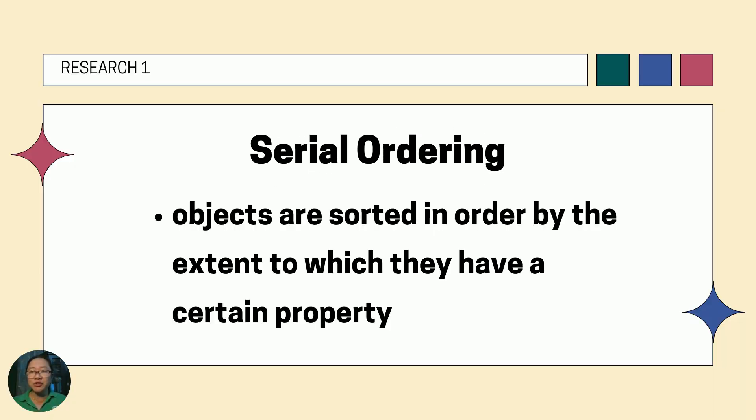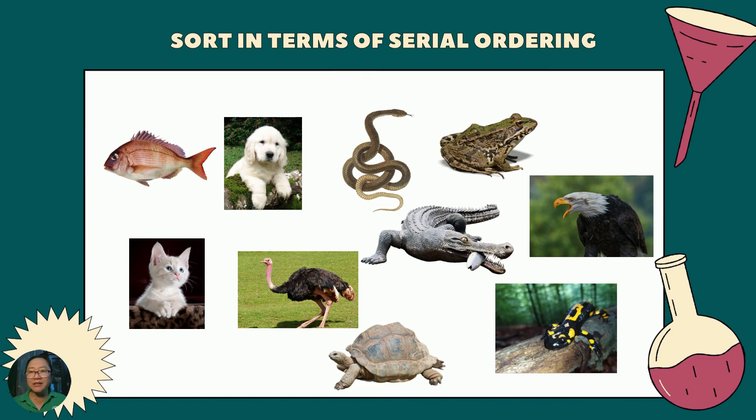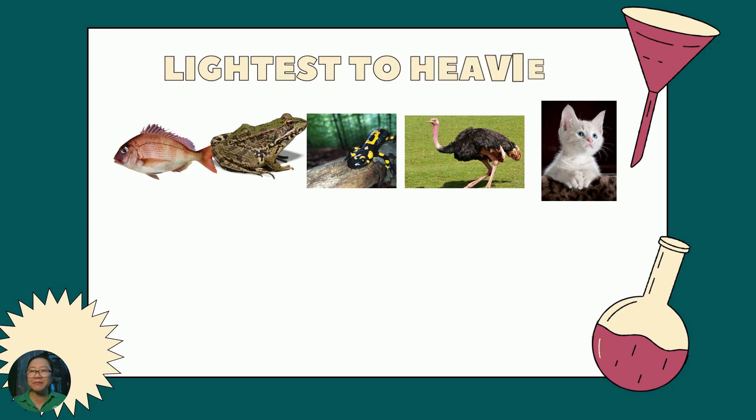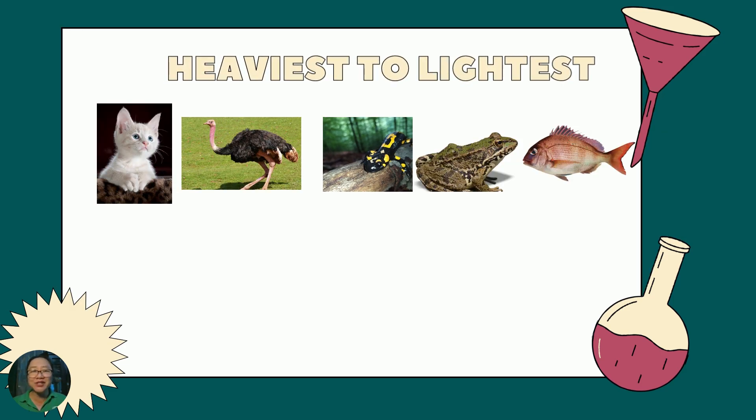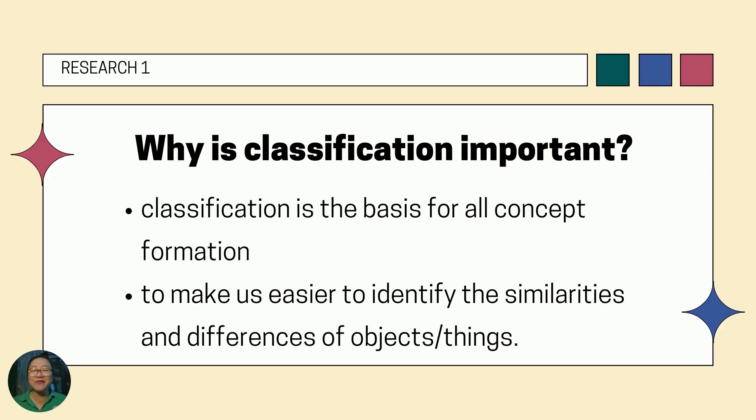Another way of sorting objects is through serial ordering. In this stage, objects are sorted in order by the extent to which they have certain property. For instance, let us sort these vertebrates in terms of serial ordering. How can we do it? We can do it by arranging the animals from lightest to heaviest like this, or from heaviest to lightest like this. So why is classification important? Classification is the basis for all concept formation. It makes us easier to identify the similarities and differences of objects or things.